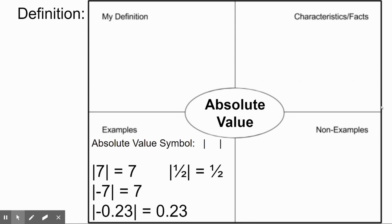First of all, the absolute value symbols are just two lines on either side of some value. And we can see a few examples where we use this. We have the absolute value of seven is equal to seven. The absolute value of one-half is equal to one-half. The absolute value of negative seven is still seven. And the absolute value of negative 0.23 is equal to 0.23.